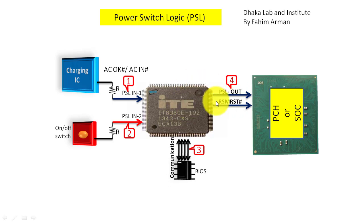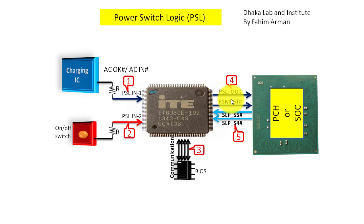After that step, we reach the last step: SLPS5# or SLPS4#. Both of these signals come from the PCH or SOC and then enter into the IO chip. These signals are very important — after they come in, you can say everything is okay.